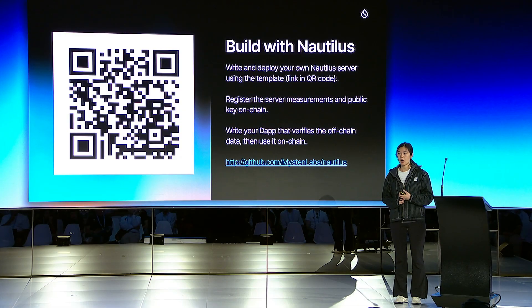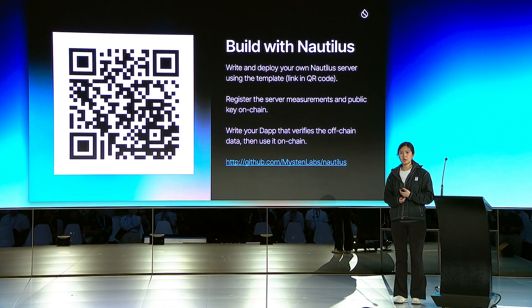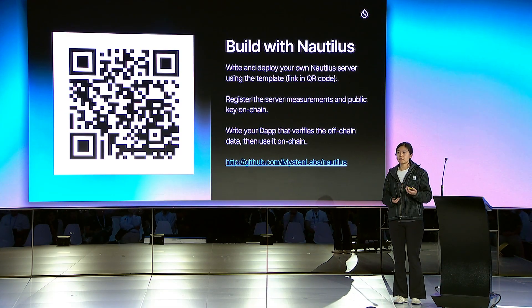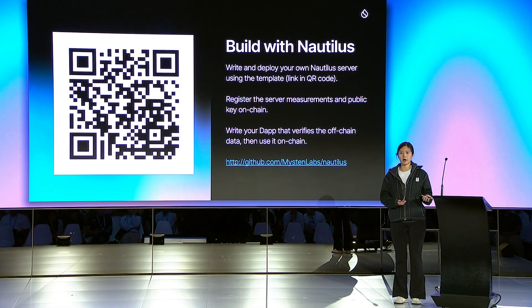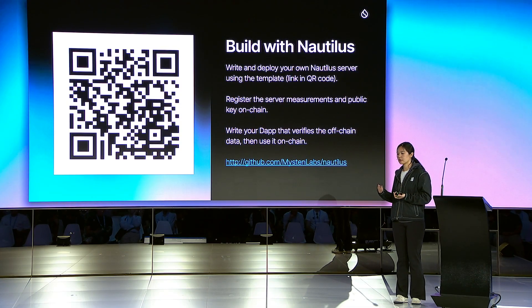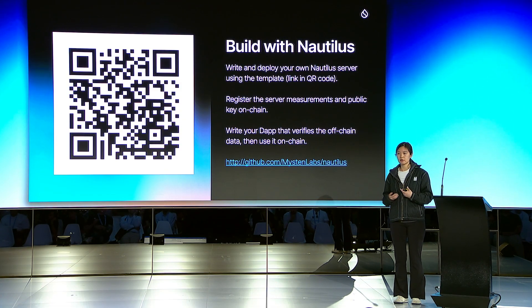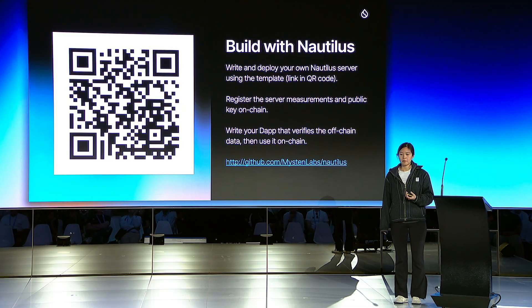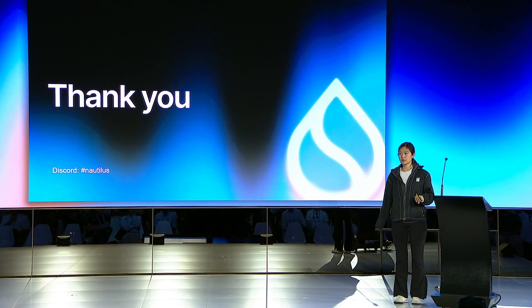So how can you build with Nautilus today? We open-sourced the Nautilus template two weeks ago, and there are three simple steps. First, come up with your own off-chain application that can run inside Enclave — we provide a template for AWS Nitro Enclave with most of the scaffolding. Second, as a dApp developer, register the server measurements and public key on-chain so anyone can look at your off-chain code and verify it's the code you're running. Third, write your decentralized application and use the data on-chain. We're looking forward to seeing what you build with Nautilus. If you have any questions, feel free to jump in the Nautilus channel on Discord. Thank you for listening.